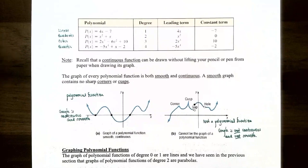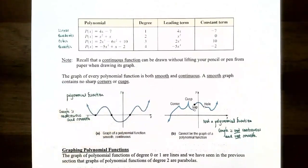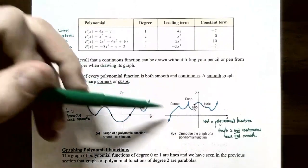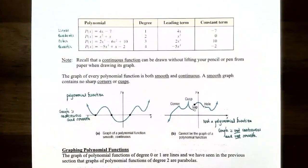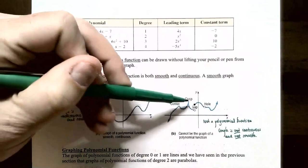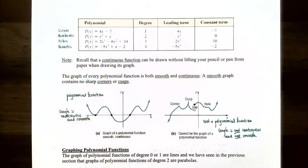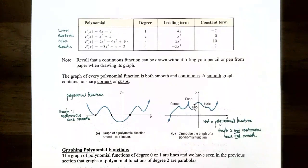Now let's talk about what the graph of a polynomial function looks like. A graph of a polynomial function can be drawn without lifting your pencil, has no sharp corners and no cusps, so the graph is smooth and continuous. On the other hand, a graph that has gaps, holes, cusps, or sharp corners cannot represent a polynomial function — it is not smooth and not continuous.